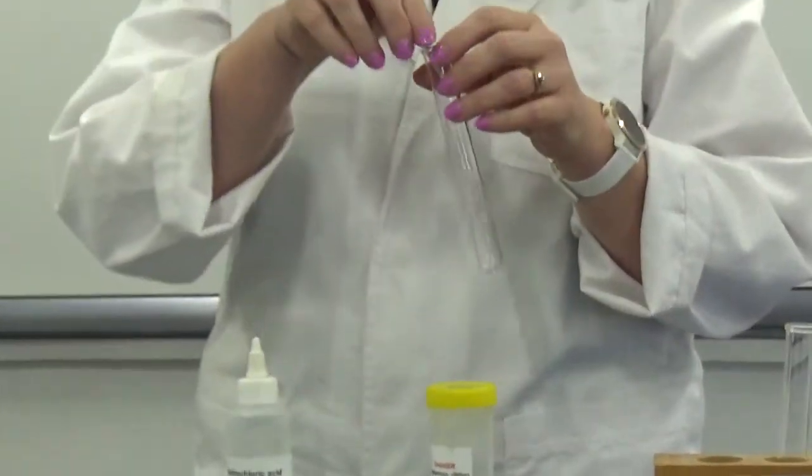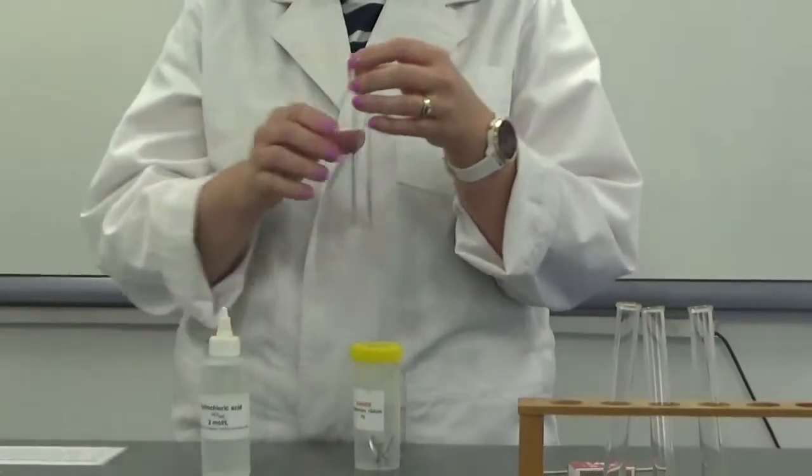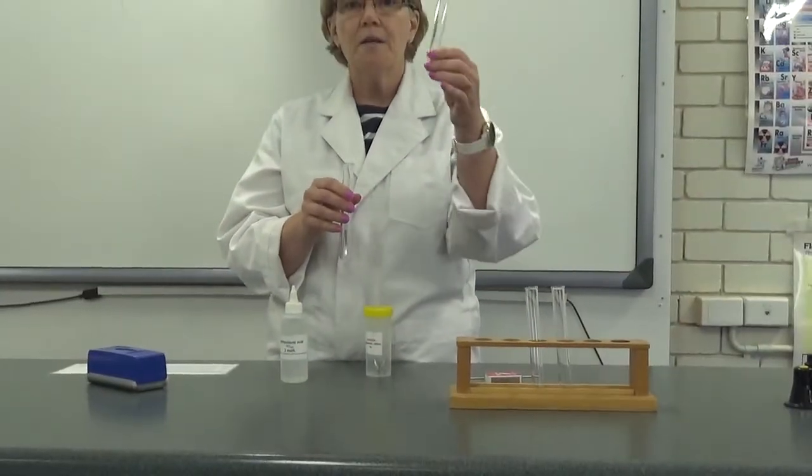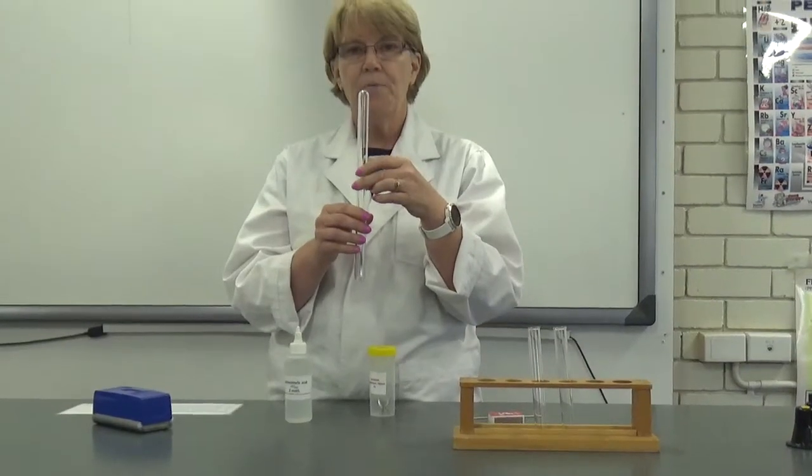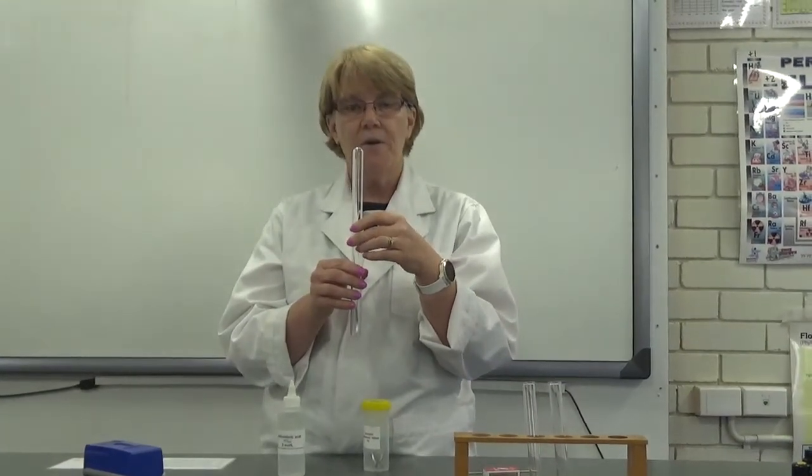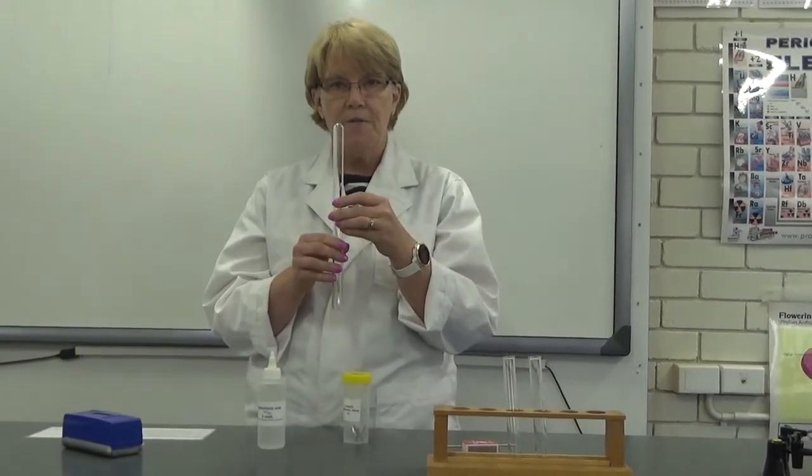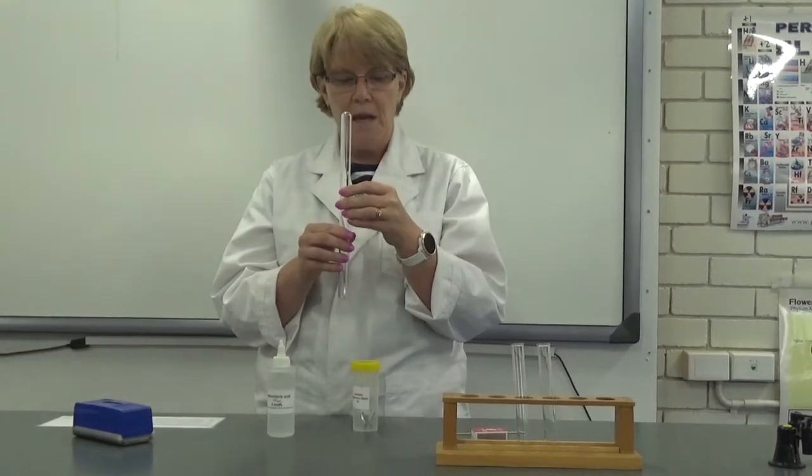I'm going to put the magnesium in the test tube. I'm going to add some acid, and I'm going to collect the hydrogen gas that should form by putting another test tube over the top. The reason that's going to collect the hydrogen is that hydrogen is a very low-density gas, and it's going to float upwards in the air.